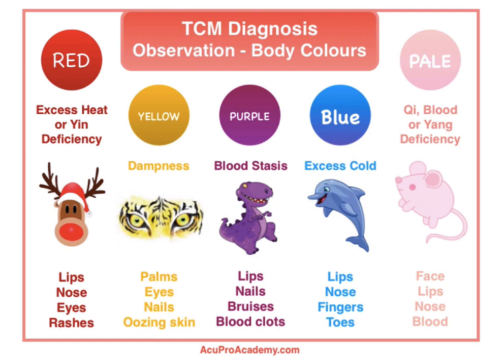Yellow palms indicate dampness — I always look at my patients' palms. Yellow sclera or yellow eyes is usually a sign of jaundice, which affects the liver — in TCM, jaundice affects liver and spleen with excess damp heat. Yellow nails similarly correlate with jaundice. Oozing skin with yellow pus or any yellowish oozing is also dampness.